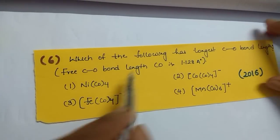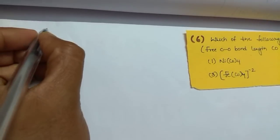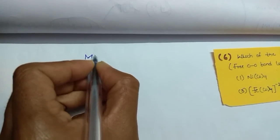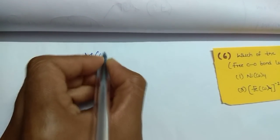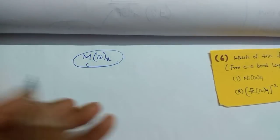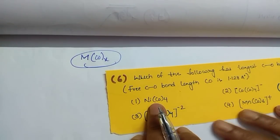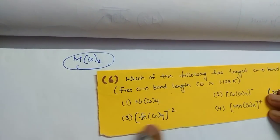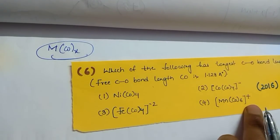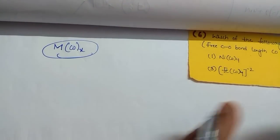This is a topic from metal carbonyls. Metal carbonyls are complexes where carbon monoxide is a ligand — metal with CO ligands. You can observe examples like Ni(CO)₄, Fe(CO)₄²⁻, Mn(CO)₆, and similar species with different ligands.